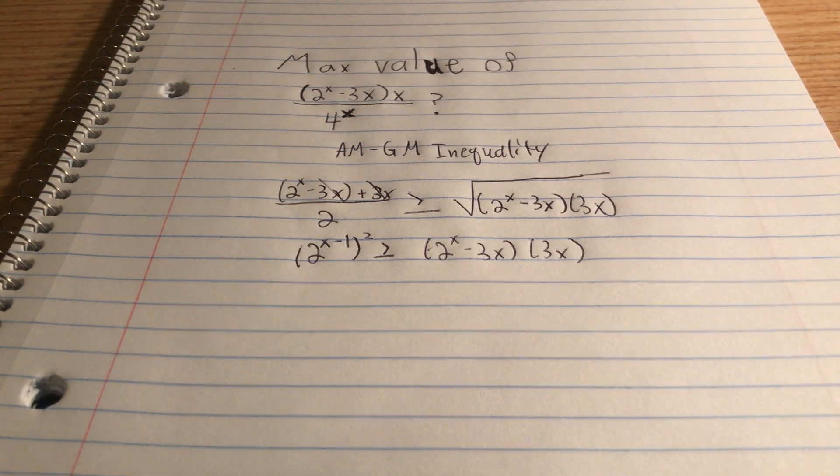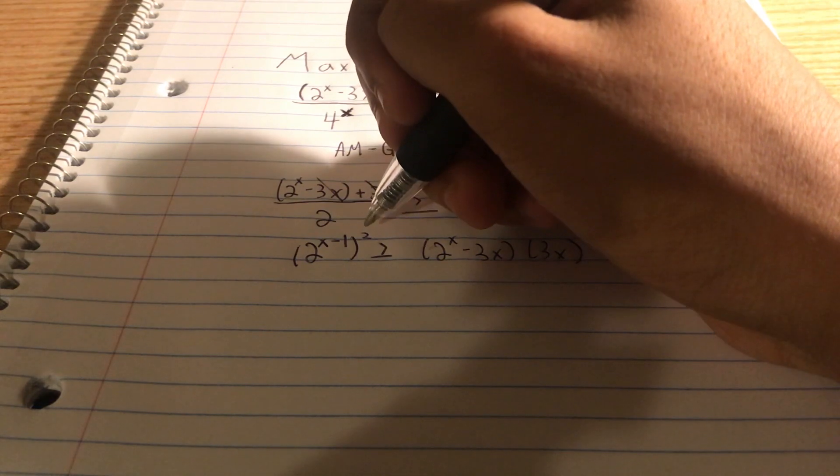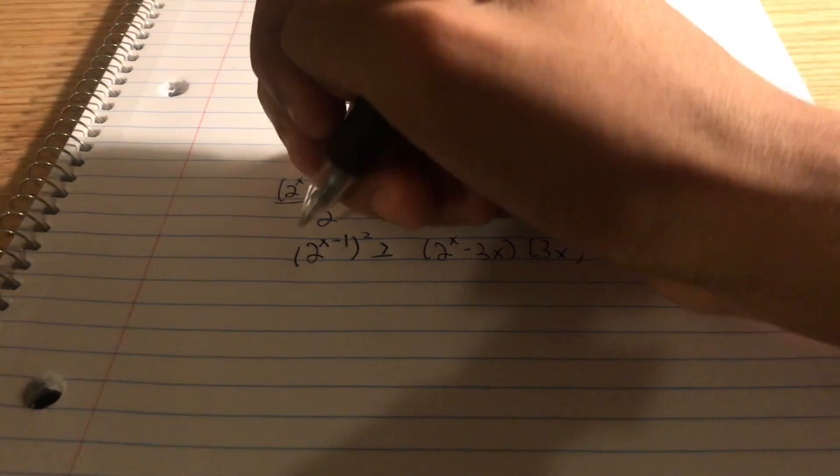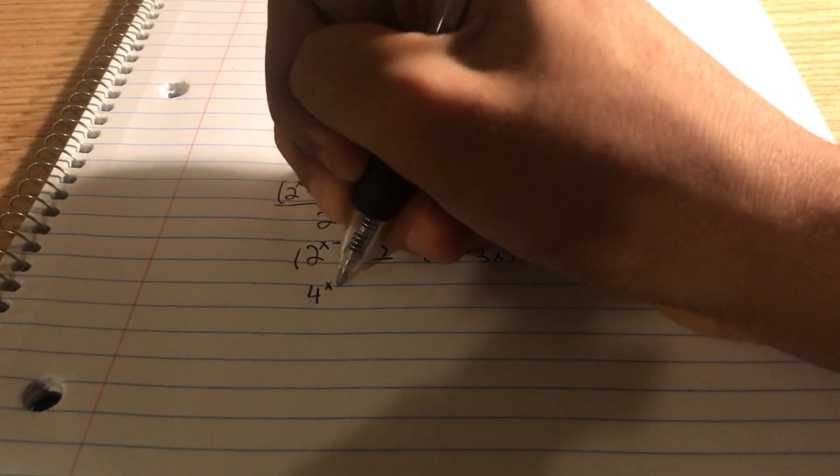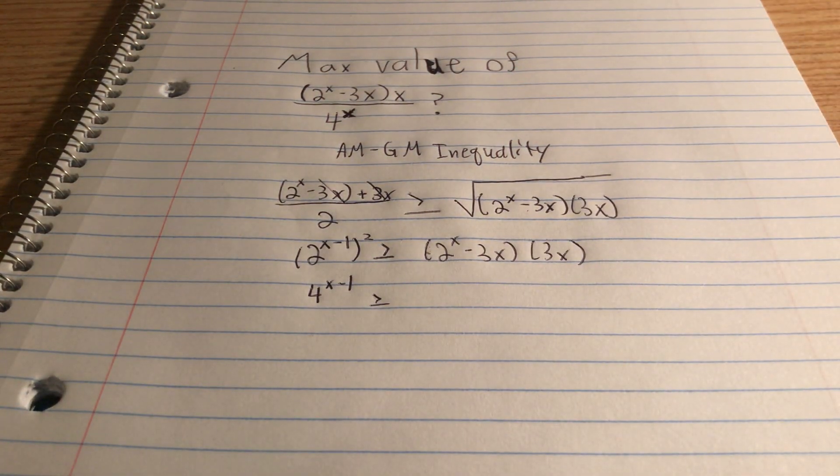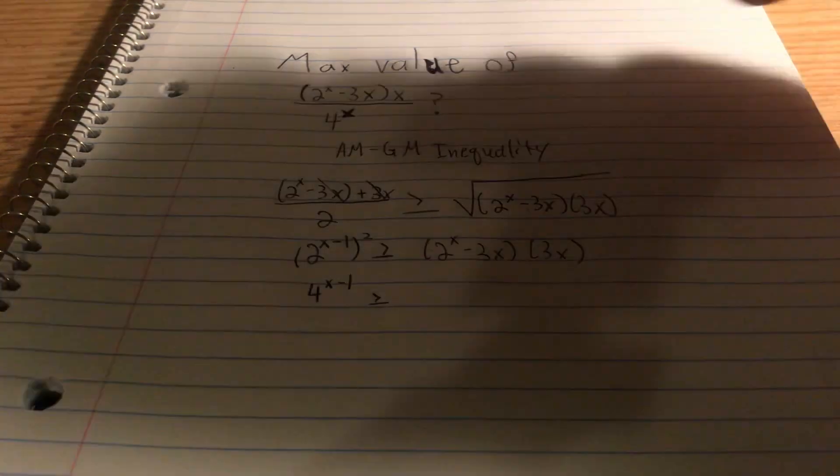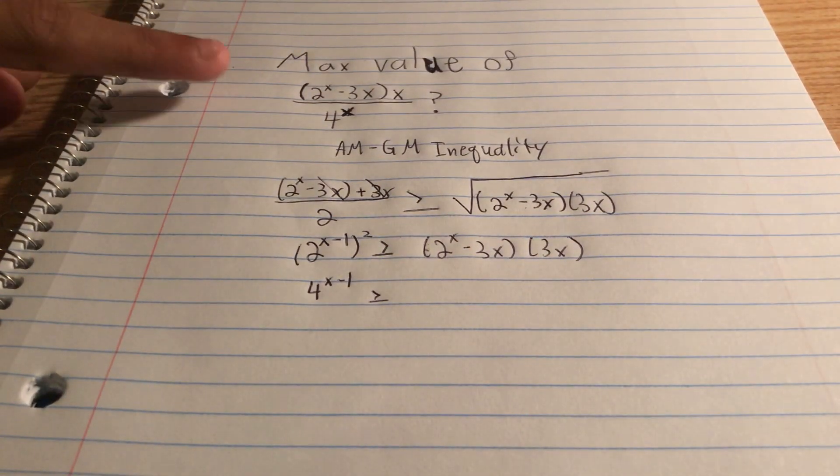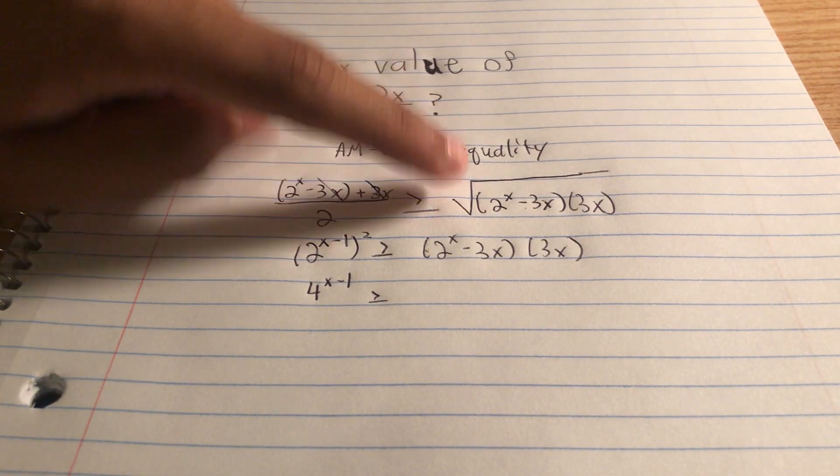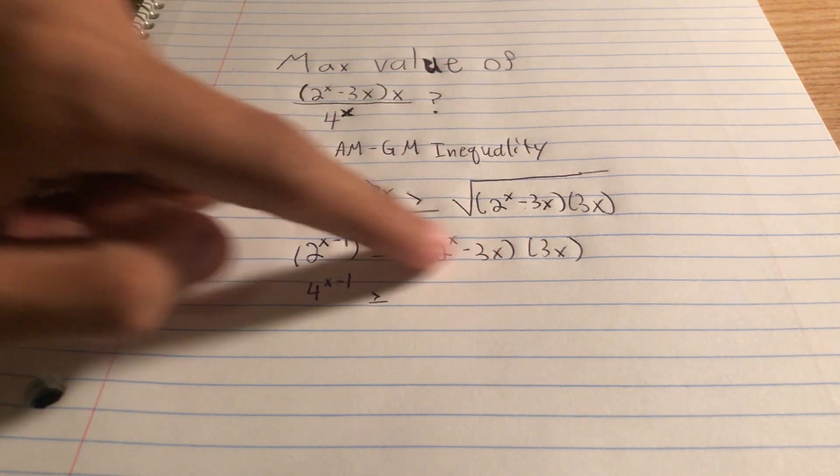All right. So what do we do next? We can bring this 2 inside and have it as 2 to the power of 2 times x minus 1, therefore getting 4 to the power of x minus 1. It's greater than or equal to this function. Now, what can we do next? All right. Look. We have 2 to the power of x minus 3 of x times 3 of x. In the numerator in our original function, I'll move over here so the shadow doesn't cover it, we have 2 to the power of x minus 3x times x.